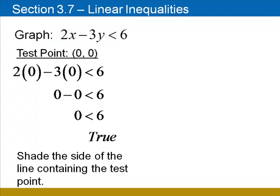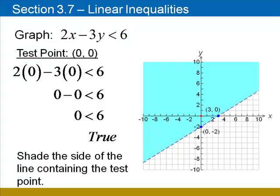That tells us to shade the side of the line that contains the test point, 0, 0. Again, our test point gave us a true inequality. We will shade the side of the line that contains the test point. If this inequality had been false, we would shade the other side.